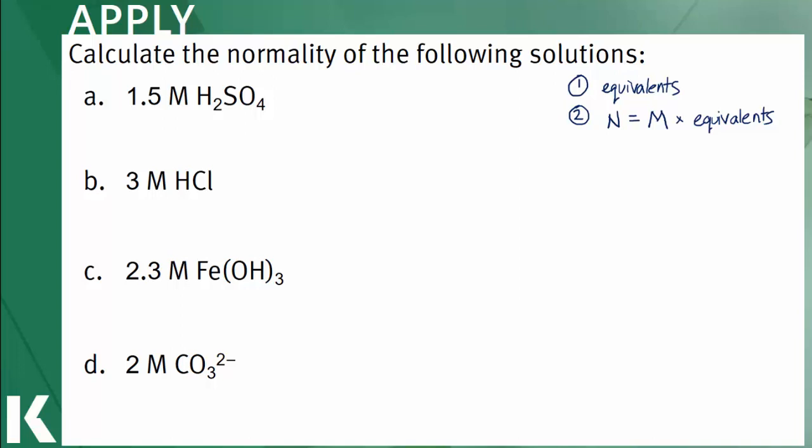In A, H2SO4, or sulfuric acid, is a diprotic acid, and will dissociate in solution to donate two equivalents of hydrogen ions. A concentration of 1.5 molar multiplied by 2 will equal a normality of 3 normal.